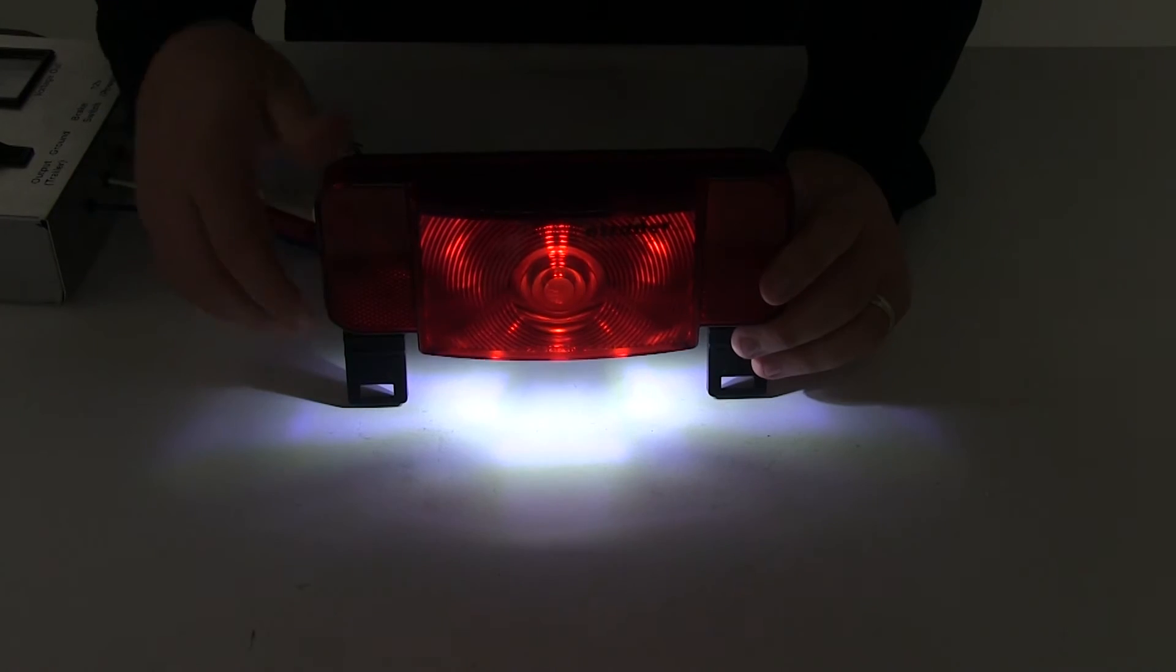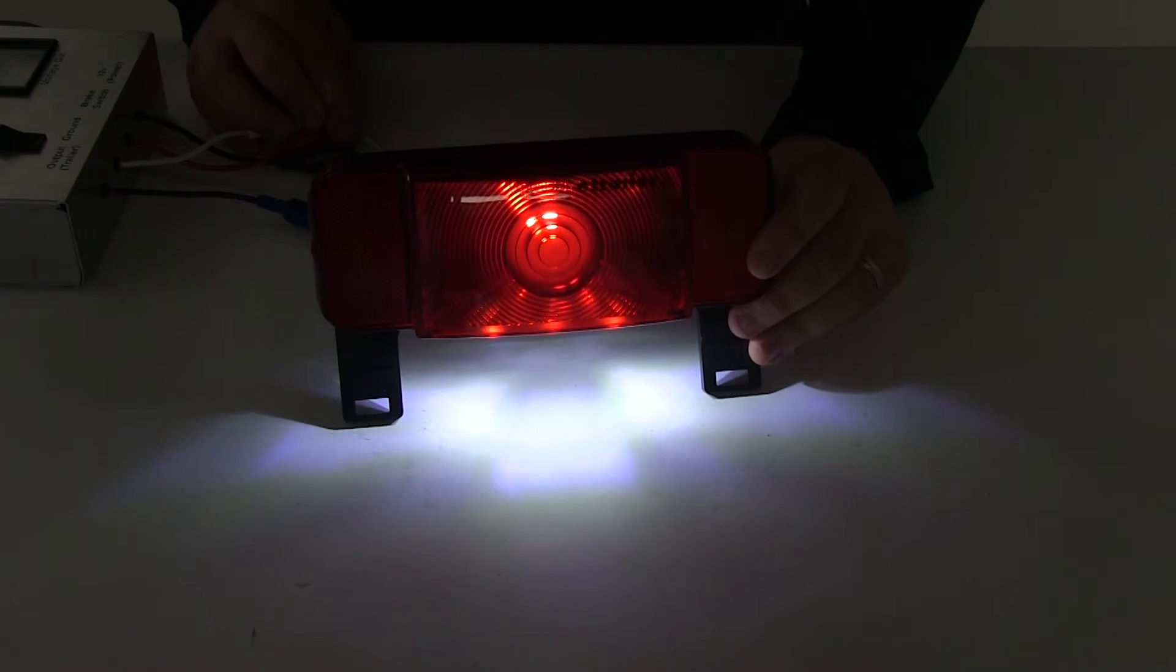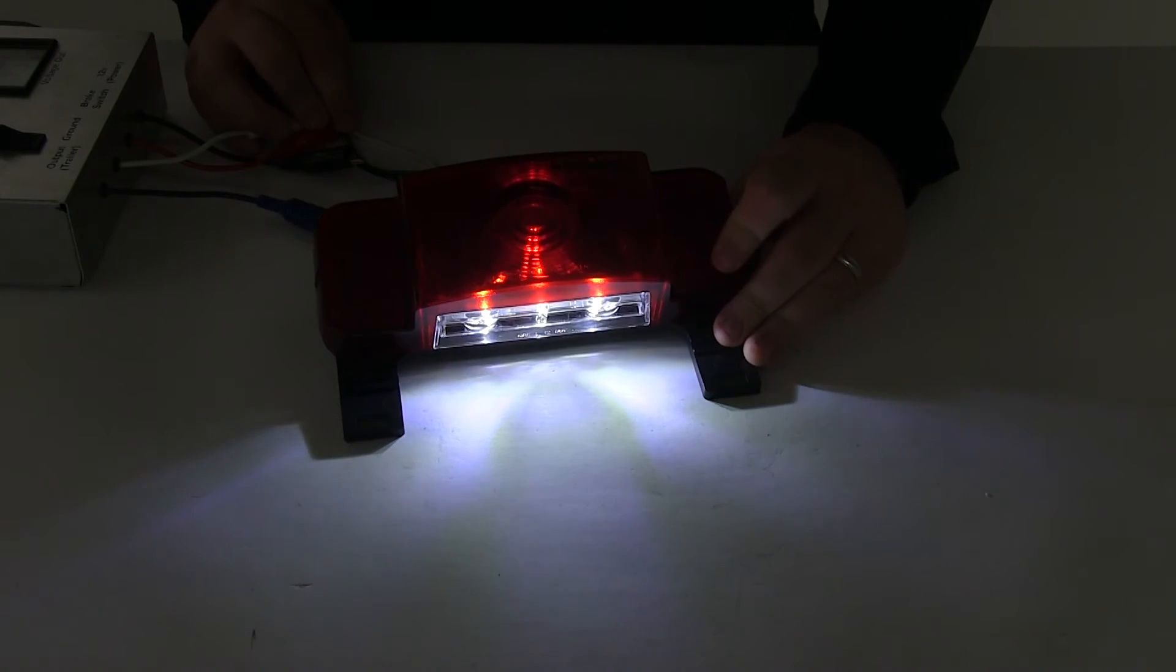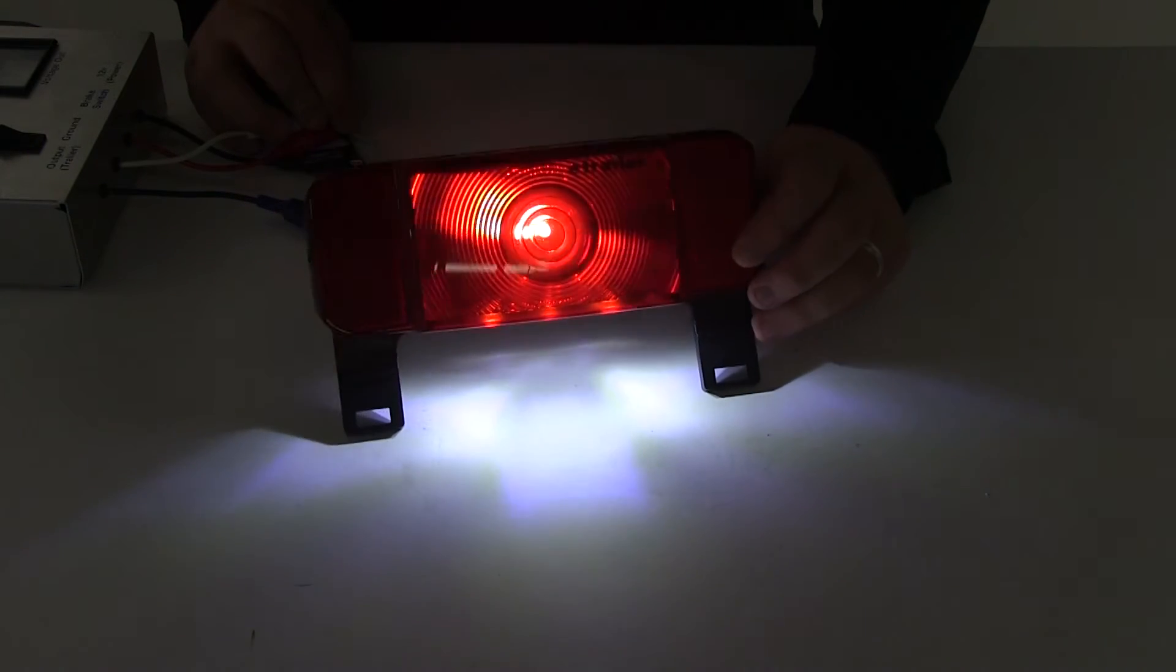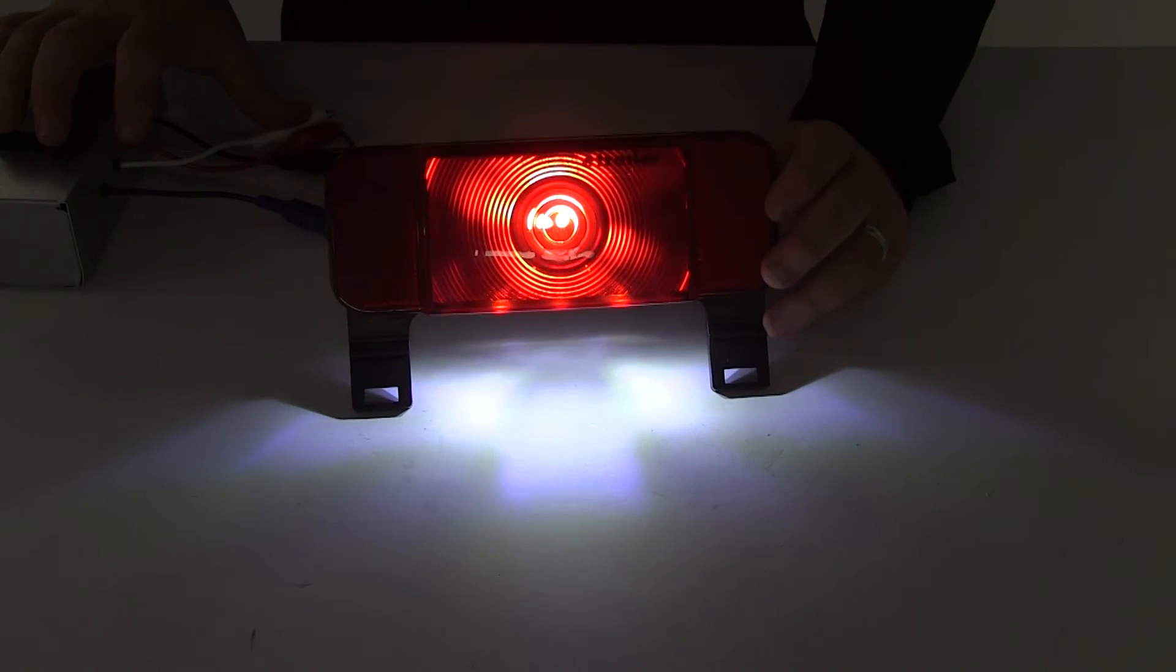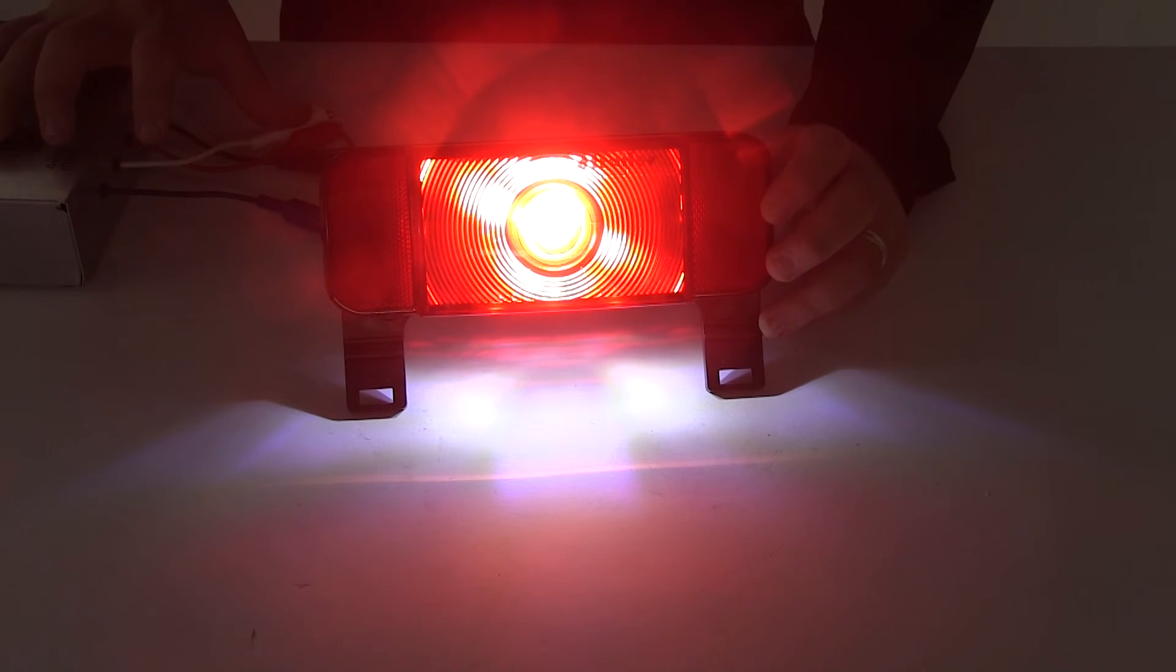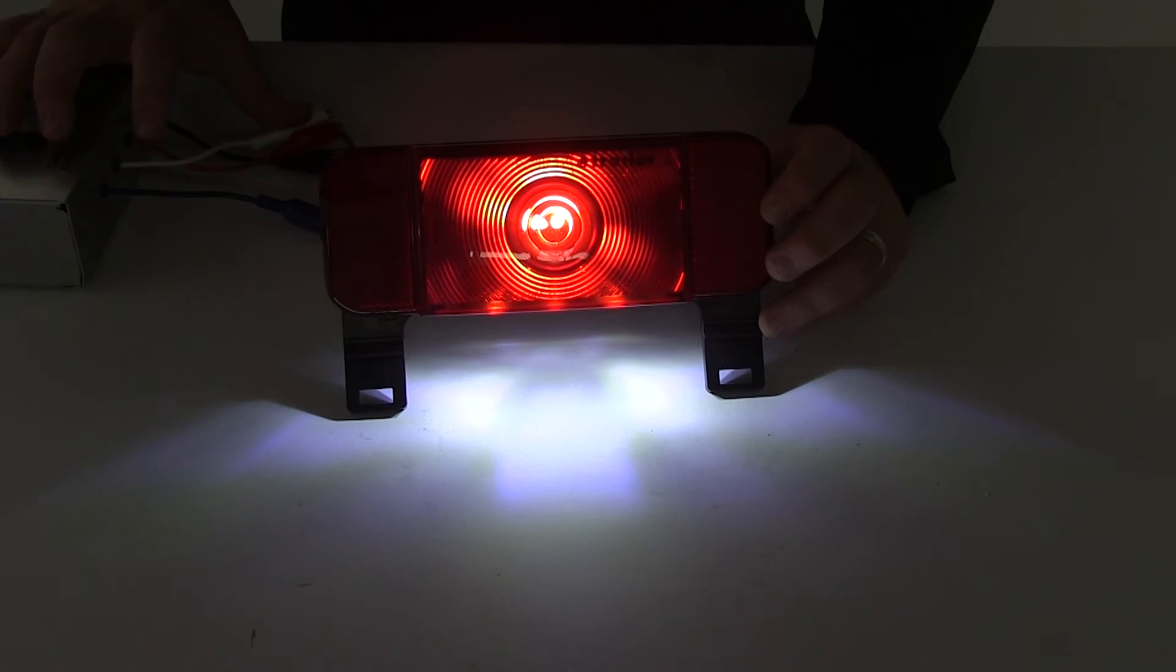You can see here, the light sends out a nice consistent signal output. You have the white light on the bottom for the license plate light, and then you have the main light in the center for the running light or tail lights. When we apply our brakes, you can see how that increases the light output for a strong consistent signal, and it does that when we activate our turn signal.